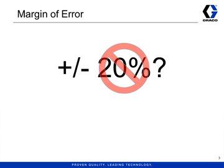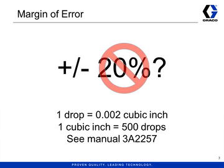The size of a drop can vary, but the number used by Graco is two thousandths of a cubic inch, or .002, which means one cubic inch is 500 drops. One pint is 14,438 drops. One pint per 24 hours equates to 10 drops per minute. In metric, one drop is 33 thousandths of a cubic centimeter, so one cc is 30 drops. These and other conversions can be found in the manual for the GBL 7500 pumps, manual number 3A-2257 on table 2.